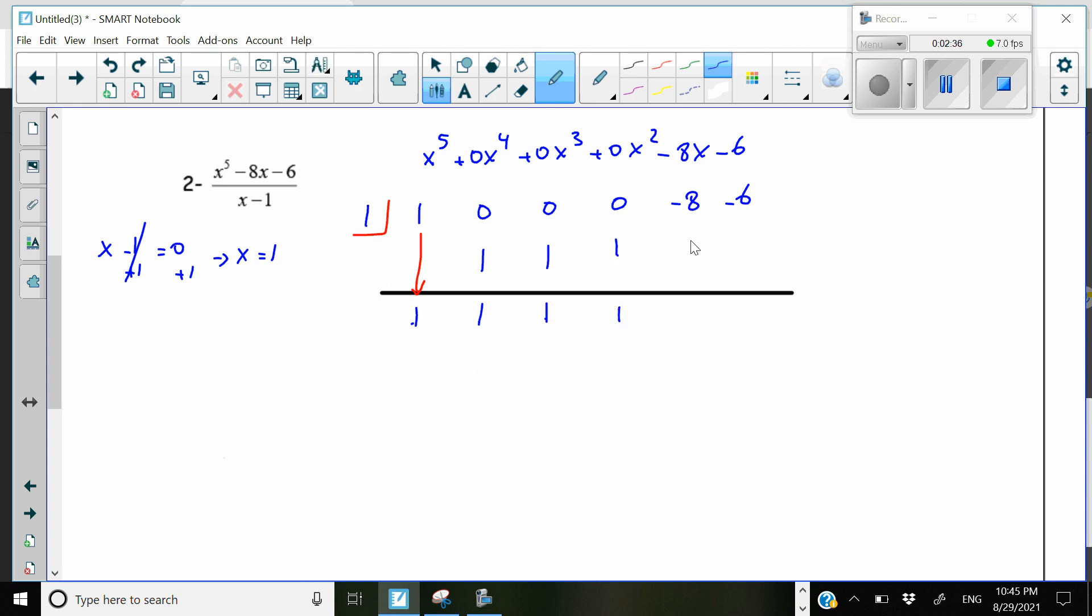0 plus 1 is 1. 1 times 1 is 1. Negative 8 plus 1 is negative 7. Negative 7 times 1 is negative 7. Negative 6 and negative 7 is negative 13.